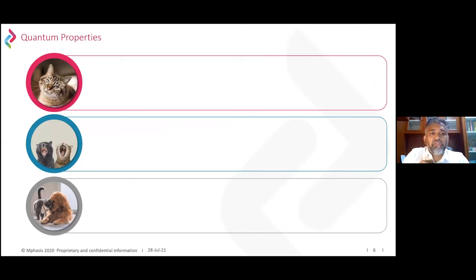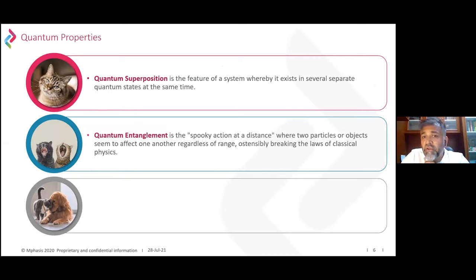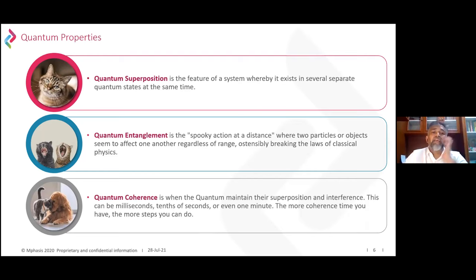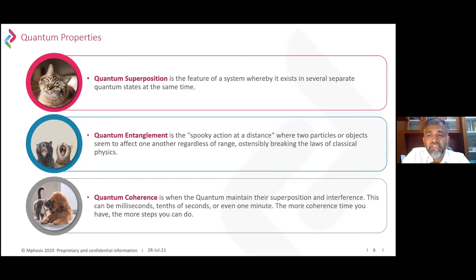Quantum superposition is a feature where a system exists in several separate states at the same time. Entanglement is what Einstein called 'spooky action at a distance' — two particles affecting one another regardless of how far apart they are. Finally, coherence is where the quantum system maintains superposition and interference, lasting milliseconds, tens of seconds, or even minutes. The more coherence time, the more computational steps you can perform. Quantum systems are extremely fragile and must be kept in a coherent state — maintained at very low temperatures, free from Earth's magnetic field and gravity.